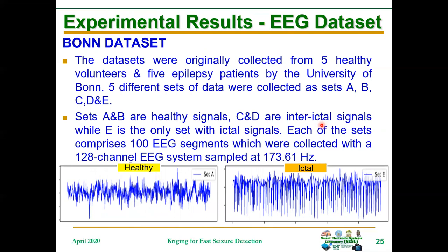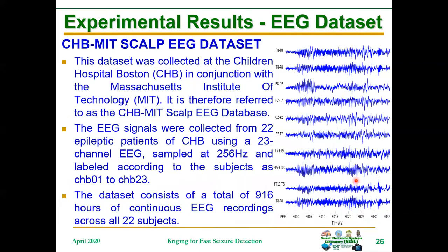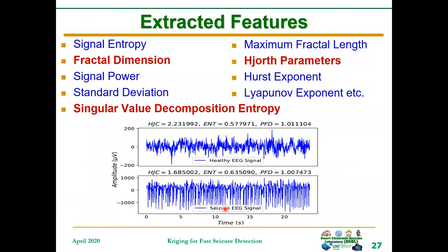The data set used for this work is the Bonn data set, collected from Bonn University in Germany from both healthy subjects and seizure patients, using a 128-channel EEG system sampled at 173.61 hertz. You can see a healthy signal and a typical seizure signal here. There are also other data sets like the MIT-SCAL data set used in some of our other works. Features extracted include fractal dimensions, dot parameters, and SVD entropy.